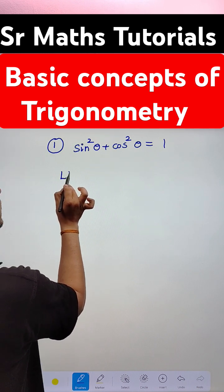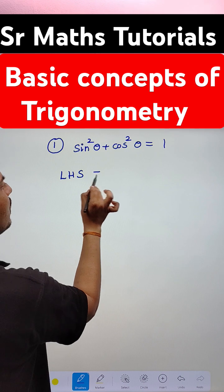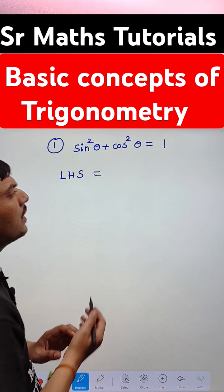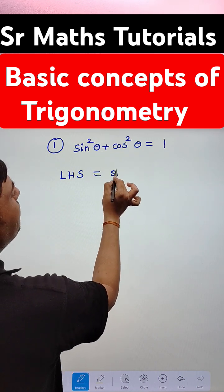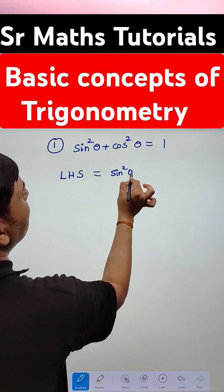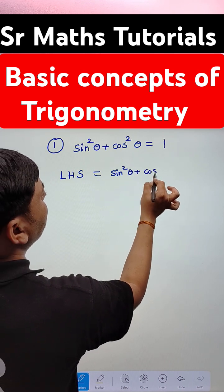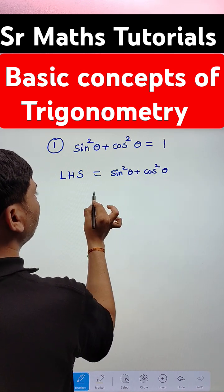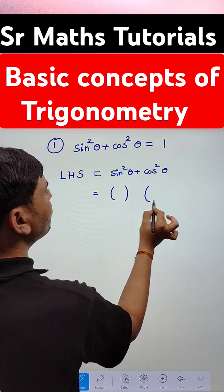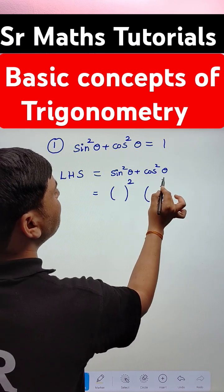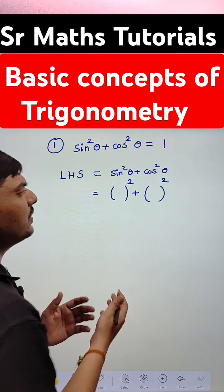First of all, I am taking LHS, the left hand side of the given information, which is sine square theta plus cos square theta. Sine square theta and cos square theta both have powers of 2. This is clear.